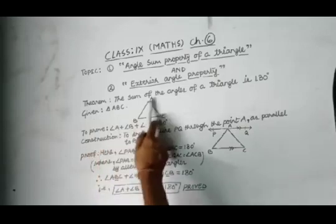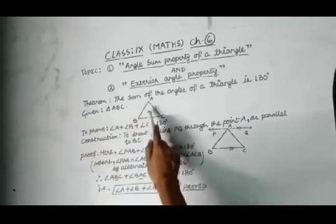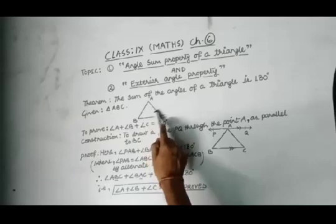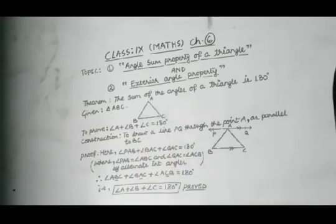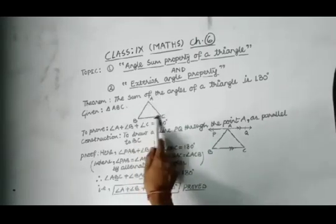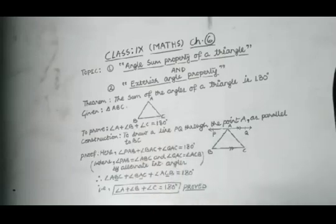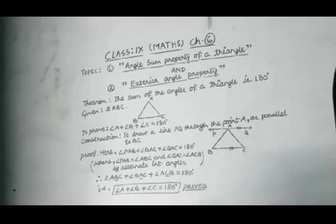We are given a triangle ABC for which we have to show that angle A plus angle B plus angle C equals 180 degrees. In order to prove this, we have to do a construction — that is, to draw a line through point A parallel to BC. We have constructed here that we have drawn the line PQ through point A as parallel to BC.